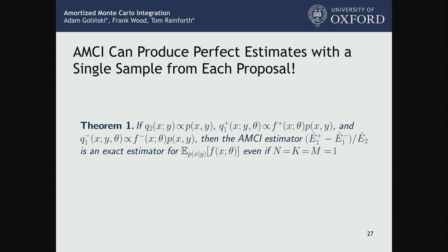More formally, we have the following theorem: if Q2 is proportional to the posterior, Q1 plus is proportional to the positive truncation of our function times the posterior, and Q1 minus is proportional to f minus times the posterior, then this estimator is exact even if we only take a single sample from each. If we can learn these perfect proposals, draw one sample from each and combine them, we always get exactly the right answer. That's a really powerful thing.